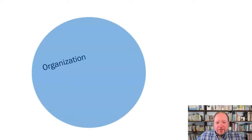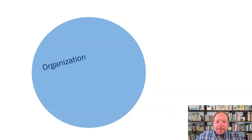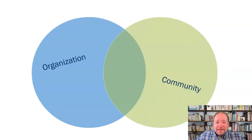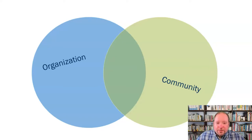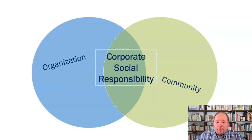Sometimes we think of organizations as these standalone things, just kind of inanimate objects out there on their own with totally separate rules. But the truth is organizations, just like people, exist in a community. There's a lot of overlap between where that organization operates, what their goals are, and those of the community in which they are surrounded and which they serve. When we're talking about corporate social responsibility, we're talking about where that overlap is.